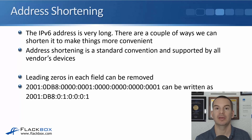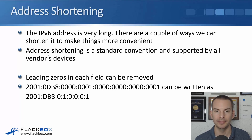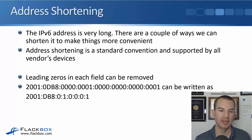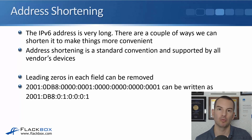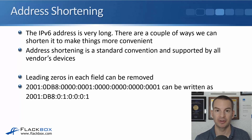Using our example address on screen, the second hex-tet of 0db8 can be written as just db8 — we strip off the leading zero. The next hex-tet of 0000 can be written as just 0, stripping off the three leading zeros. The hex-tet 0001 can be written as just 1, and so on. Whenever you see a hex-tet without four hexadecimal characters, you know the missing leading characters were all zeros.